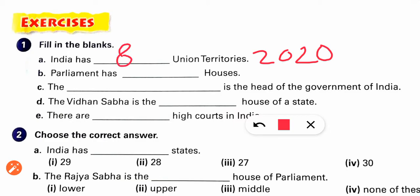If your teacher has taught from the book with the old figure, then write seven union territories. Previously India had seven union territories, but as of 2020 there are eight. Parliament has how many houses? Two houses — Lok Sabha and Rajya Sabha.